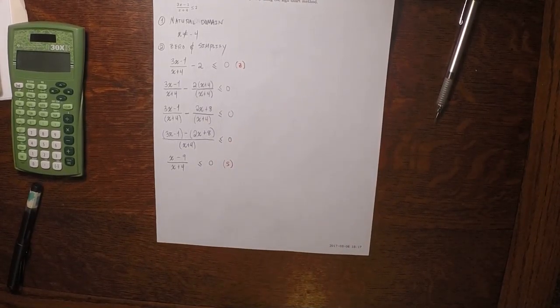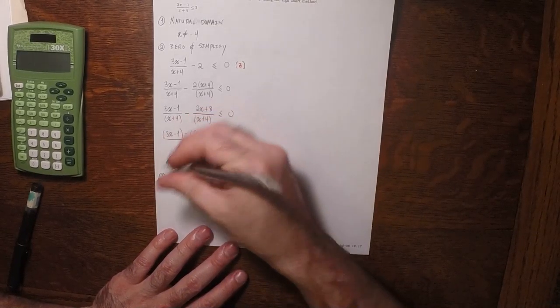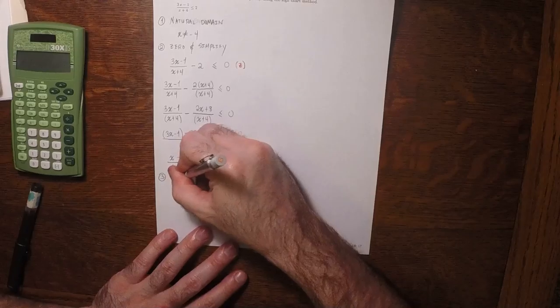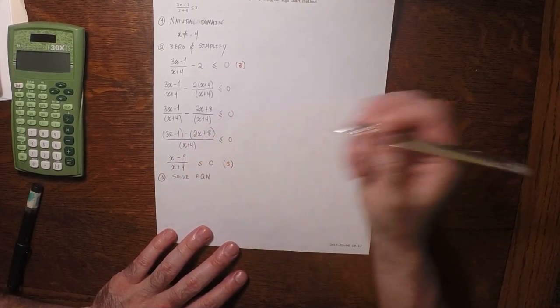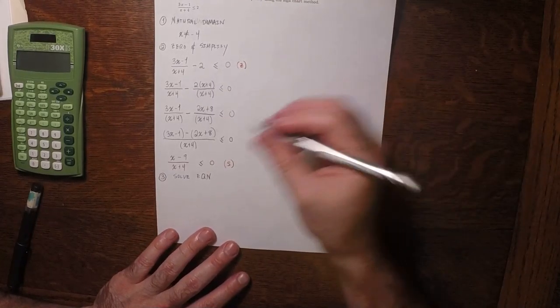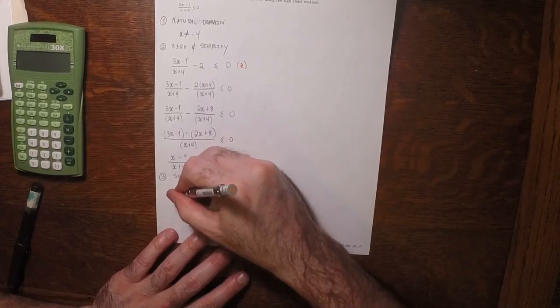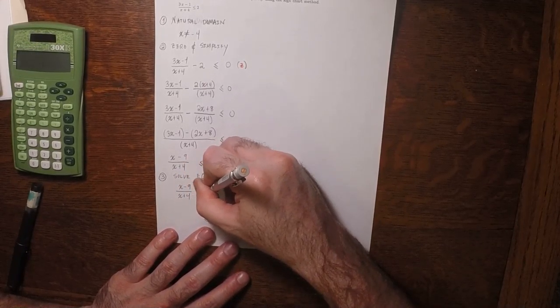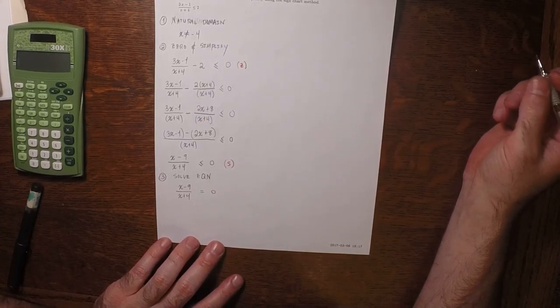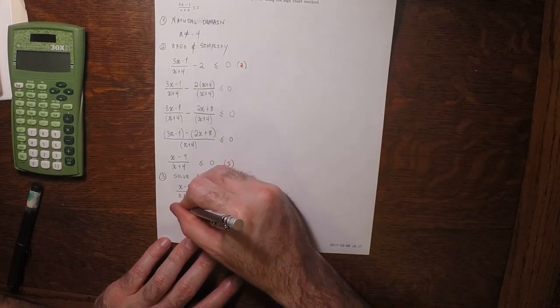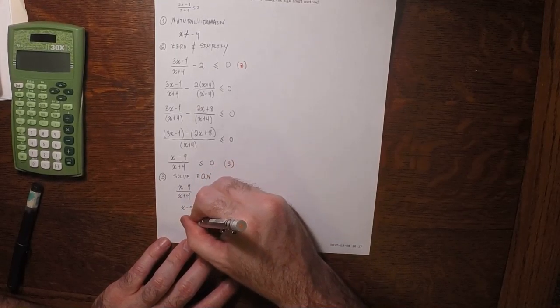The next step is we want to solve the corresponding equation. We're going to solve (x - 9)/(x + 4) equals 0. Well, that's the same thing as saying that x - 9 equals 0, so x is 9.